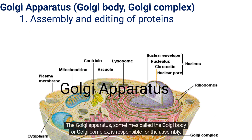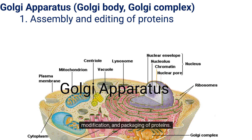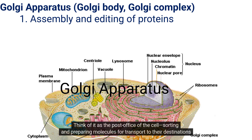The Golgi apparatus, sometimes called the Golgi body or Golgi complex, is responsible for the assembly, modification, and packaging of proteins. Think of it as the post office of the cell, sorting and preparing molecules for transport to their destinations.